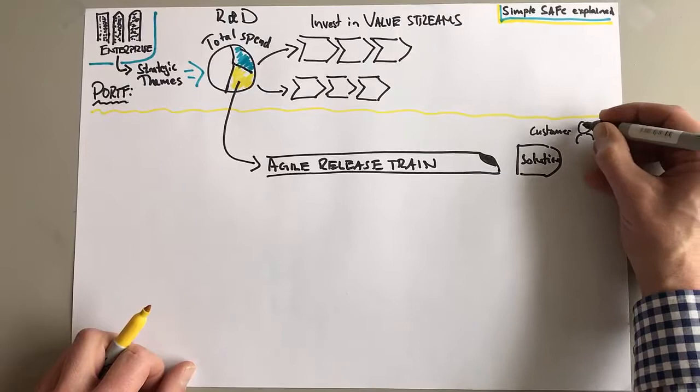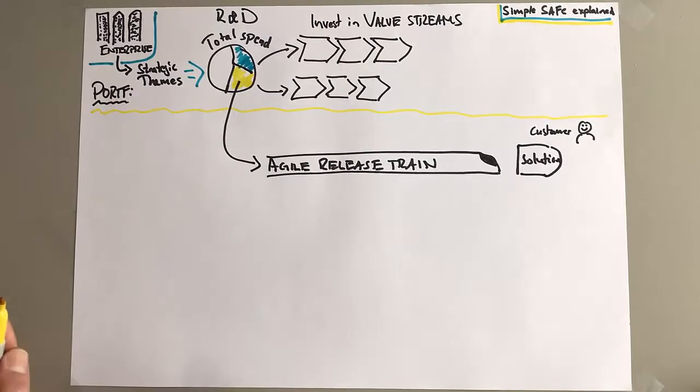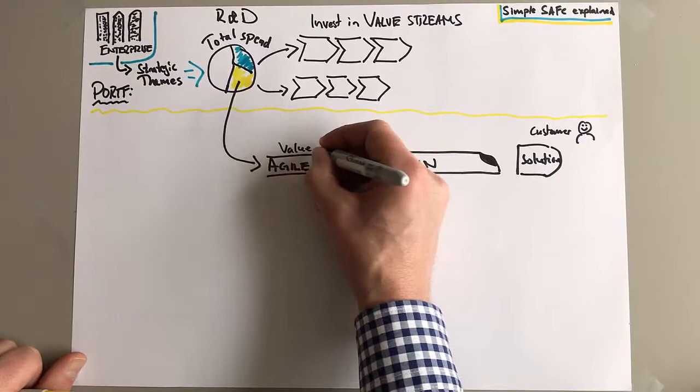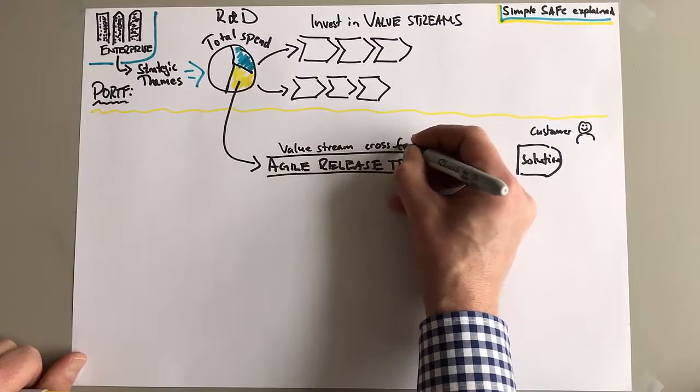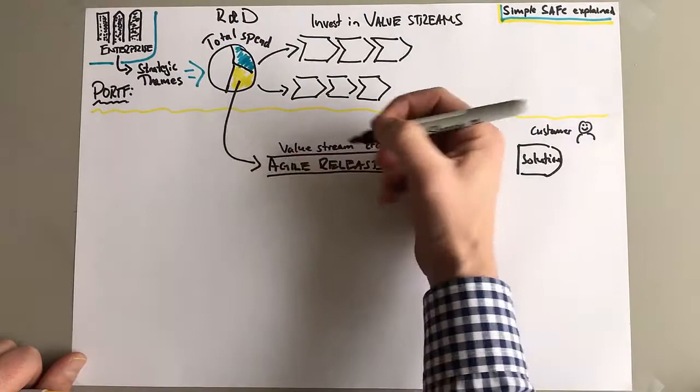So this Agile Release Train, it serves a value stream and it delivers a solution, because we call it the product but we like to call it solution. It may be more than a product, but a solution to a customer who is using it, internal or external. It's a value stream, so it's cross-functional.